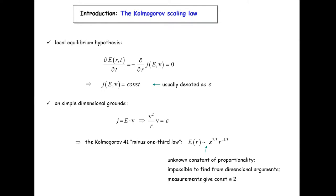The classical cascade theory supposes the small scales are statistically stationary, and with the local equilibrium hypothesis you can find that the energy flux is constant, usually denoted as epsilon. From simple dimensional reasoning you can arrive at the famous minus one-third law, or minus three-fifths law in wave number space, called the K041 law. The constant here is principally unknown from dimensional arguments, and measurement gives this constant approximately two.